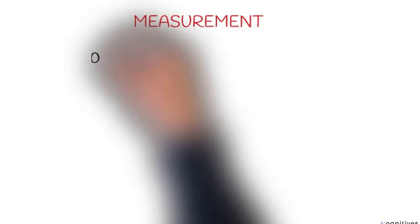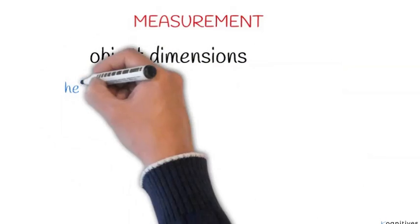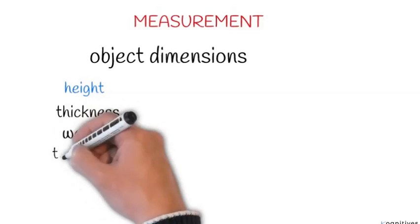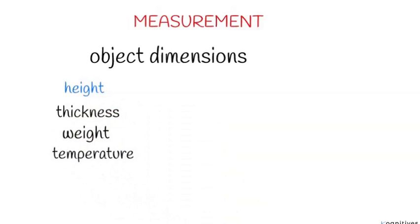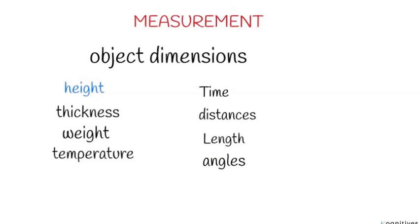Measurements — that's our first topic under mechanics. Many objects have dimensions: height, thickness, weights, temperature, time, distances, lengths, and angles can be taken. When you see an object, you know these particular things.